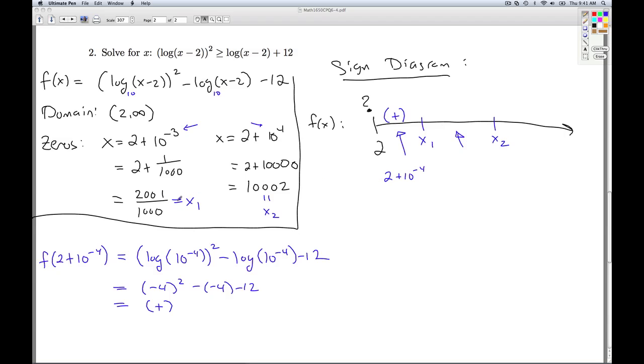Now I've got to find a test value between here and here. That's of the form two plus ten to the something. And so I could just pick two plus ten. I could just pick twelve. So I plug twelve in to my function. Twelve minus two is ten. And so here, log base ten of ten is one. I get one squared minus one minus twelve, which is a negative.